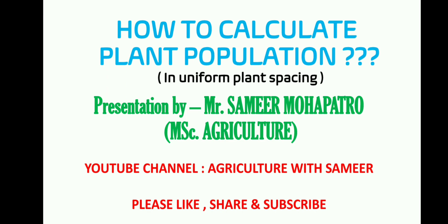What is plant population? Plant population is the total number of plants that's grown in an acre or a hectare of land. To calculate plant population in uniform plant spacing means that if we plant a crop...